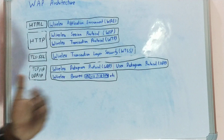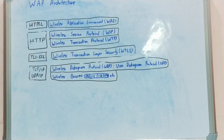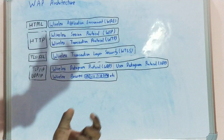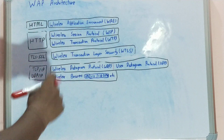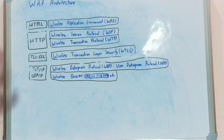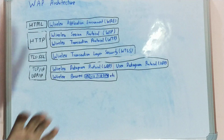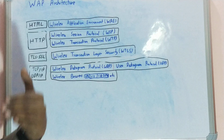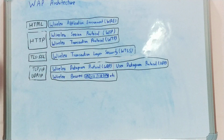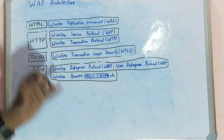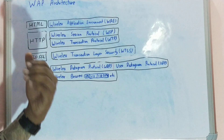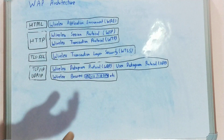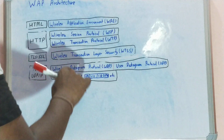Next one is Wireless Session Protocol. From the name only you can make out that this provides the session between the mobile communication device and the internet — it maintains a particular session. Next is Wireless Transaction Protocol. The work of this protocol is that if there are any lost packets which were not sent, its job is to send those lost packets again to the receiver.